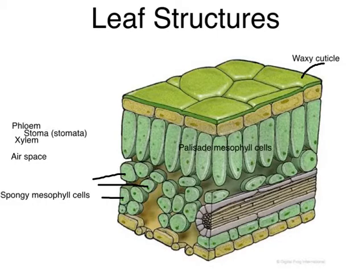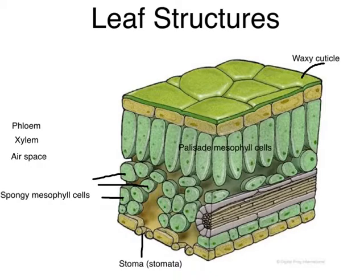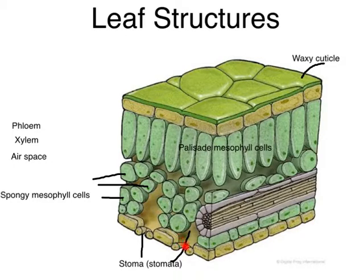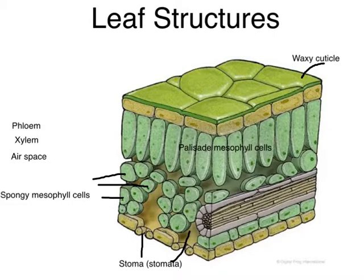Next on our list is the stomata, which is singular, or stoma, which is plural. These are the openings — the actual opening right there — called stoma. You can actually see these; if you take a leaf and look at the underside of it under a microscope, you should be able to see these no problem. The stoma are openings that allow gas exchange.